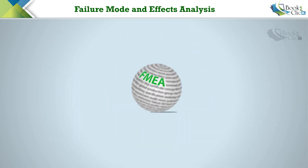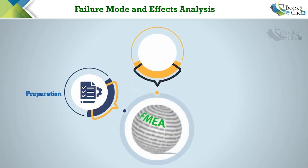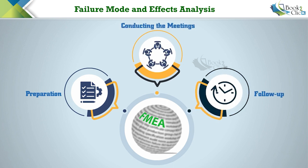FMEA is performed in three steps, with key activities at each step. They are: Preparation, Conducting the meetings, and Follow up.